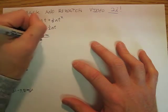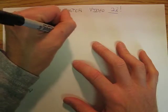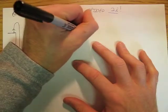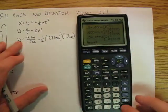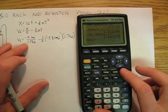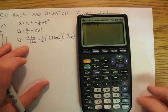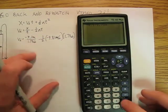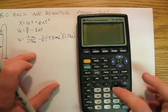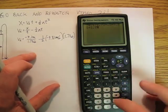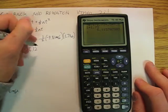So then I plug in my values and go to my calculator: negative four point one divided by one point seven three, minus a negative — so I'll make that a plus — point five times nine point eight one times one point seven three. And so I come up with vi equals six point one two meters per second.